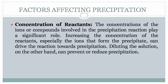Second is concentration of reactants. The concentrations of the ions or compounds involved in the precipitation reaction play a significant role. Increasing the concentration of the reactants, especially the ions that form the precipitate, can drive the reaction towards precipitation. Diluting the solution, on the other hand, can prevent or reduce precipitation.